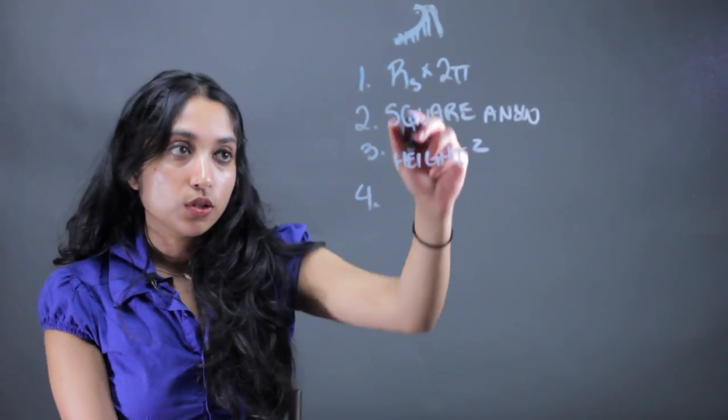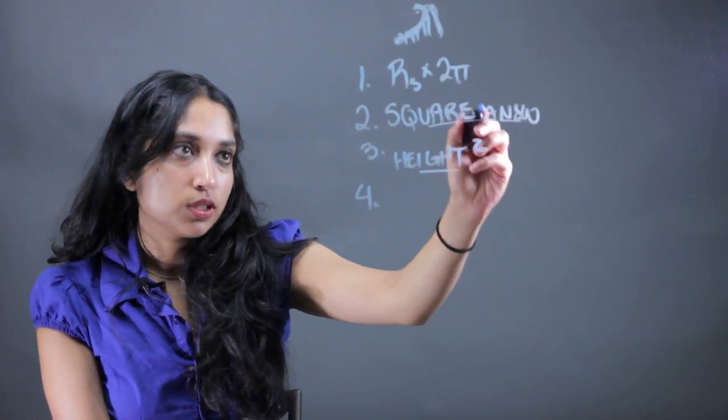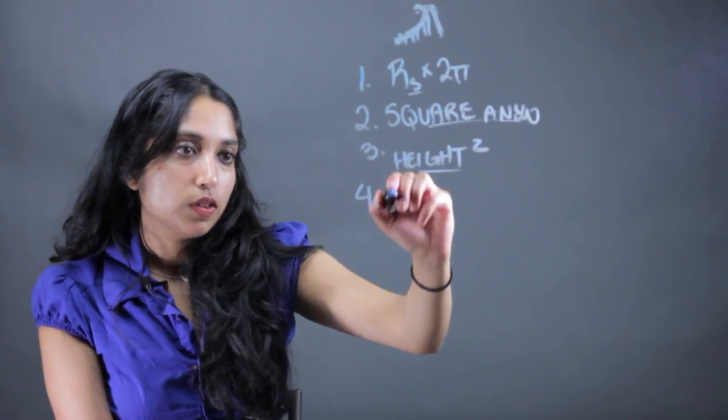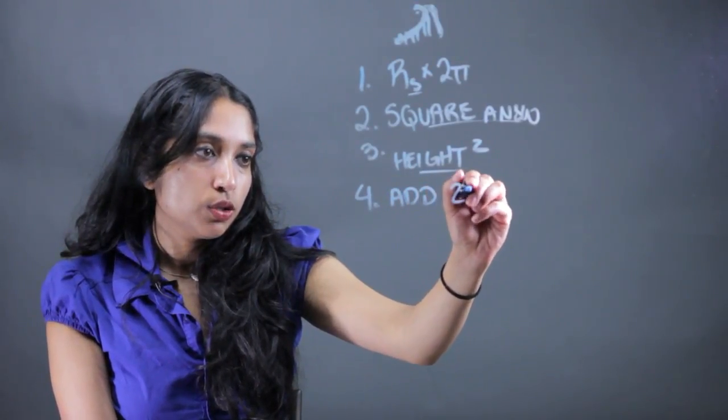Fourth thing you're going to do is add the answers from step 2 and 3. So the height squared plus the square, all these guys, let's just call that add steps 2 and 3.